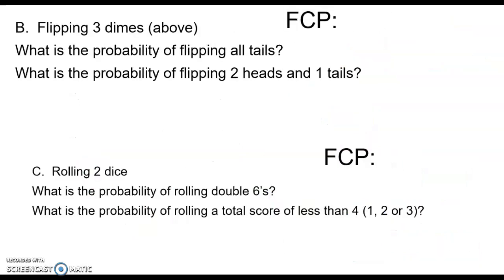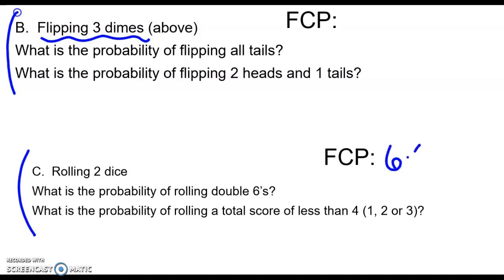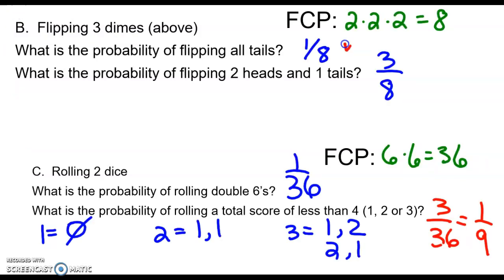For the remaining practice, try problem B which goes back to flipping three coins using the tree diagram. And for rolling two dice, there are six outcomes on each die, giving 36 possible outcomes. The probability of two sixes is one out of 36, and the probability of rolling a one, two, or three is three out of 36. Pause and try these, then check your answers.